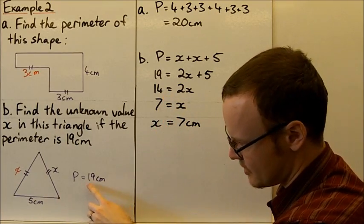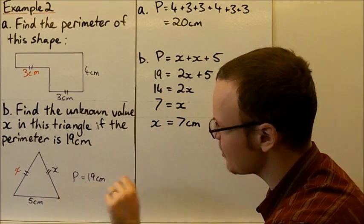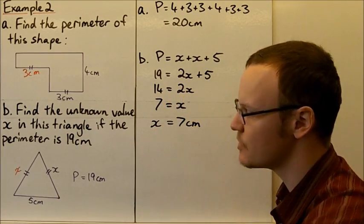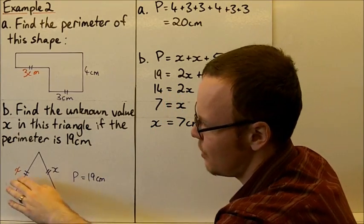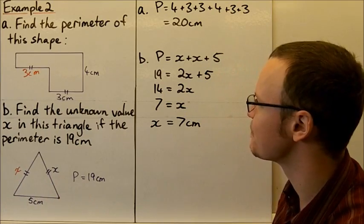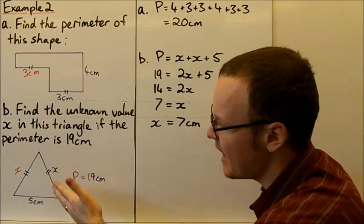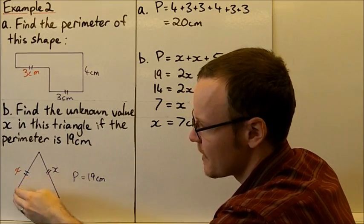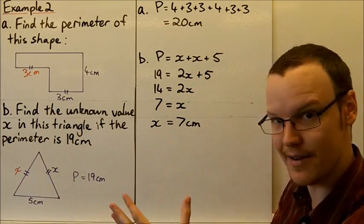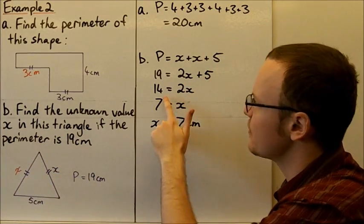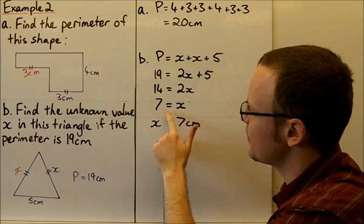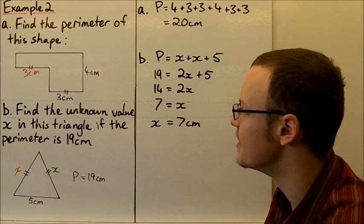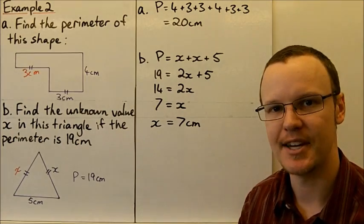So 14 equals 2x. If we find half of 2x, that gives us 1x. Dividing both sides by 2, we get x equals 7. So x is 7 centimetres.